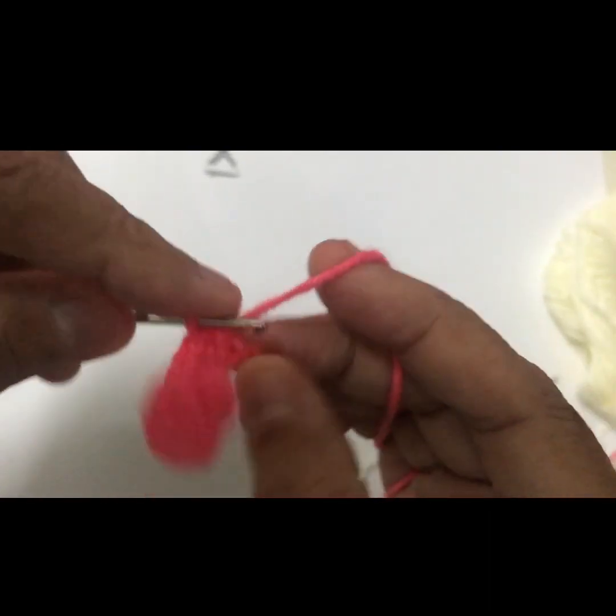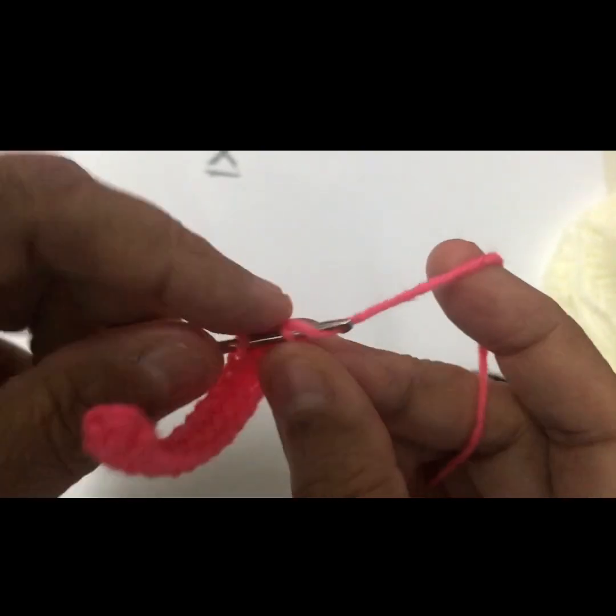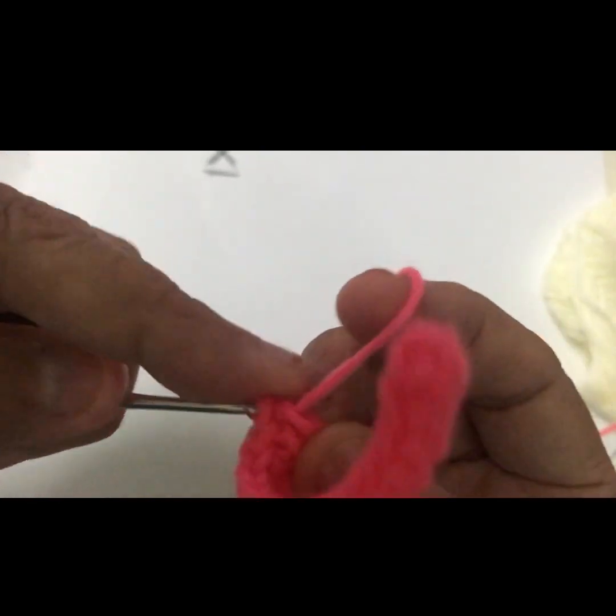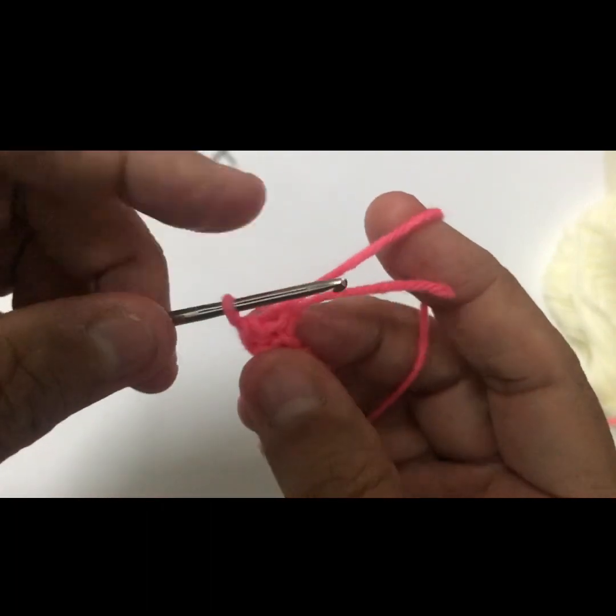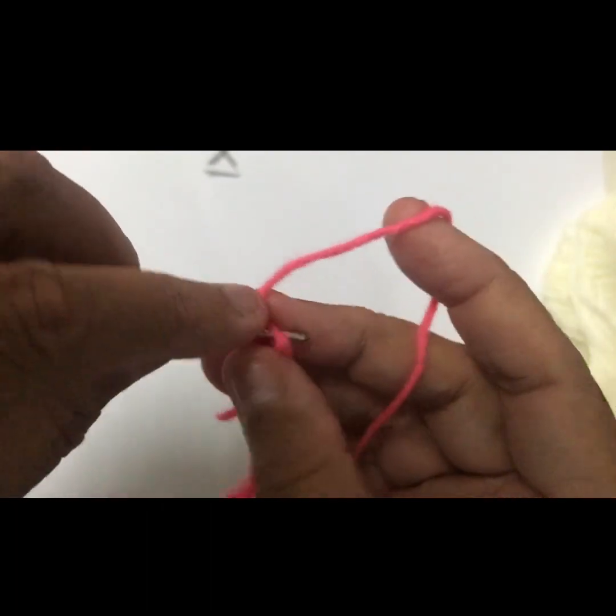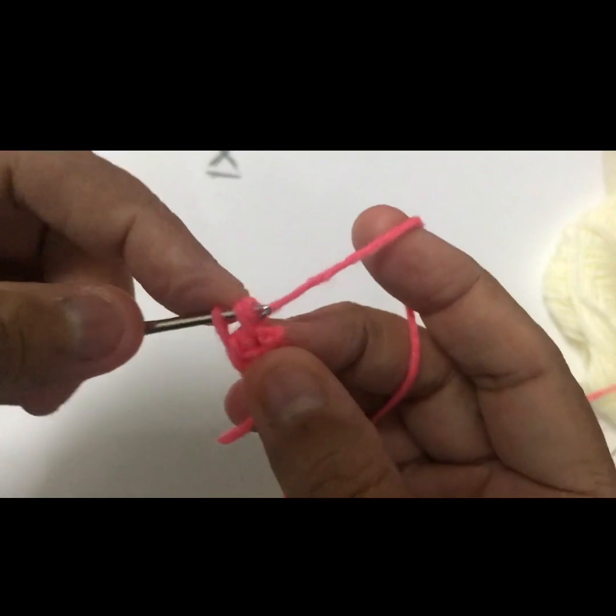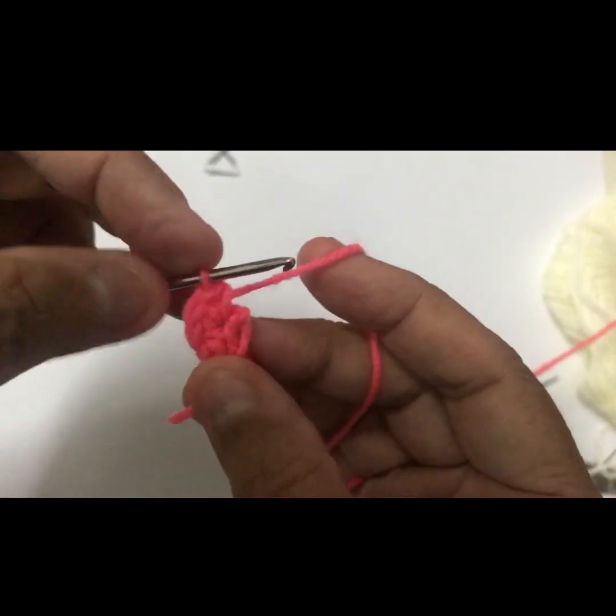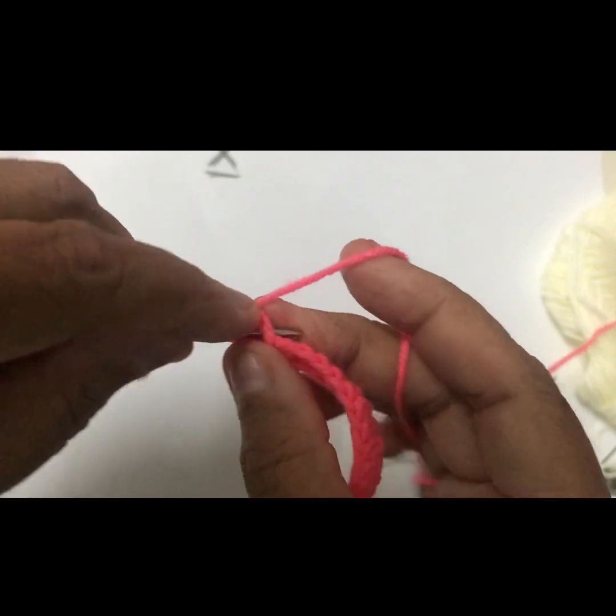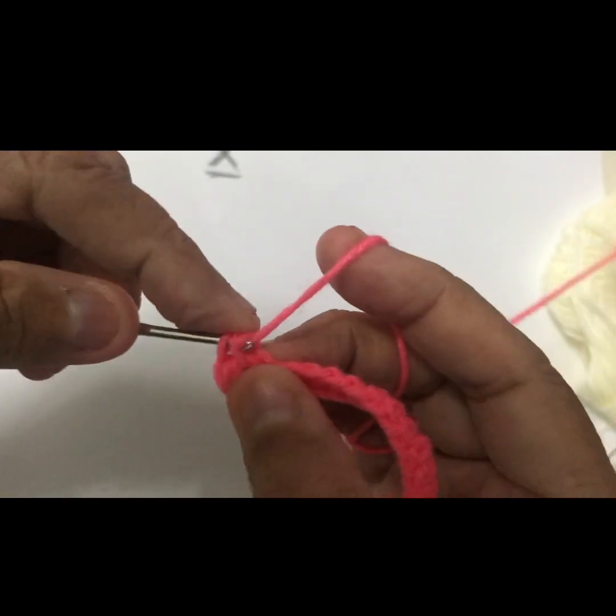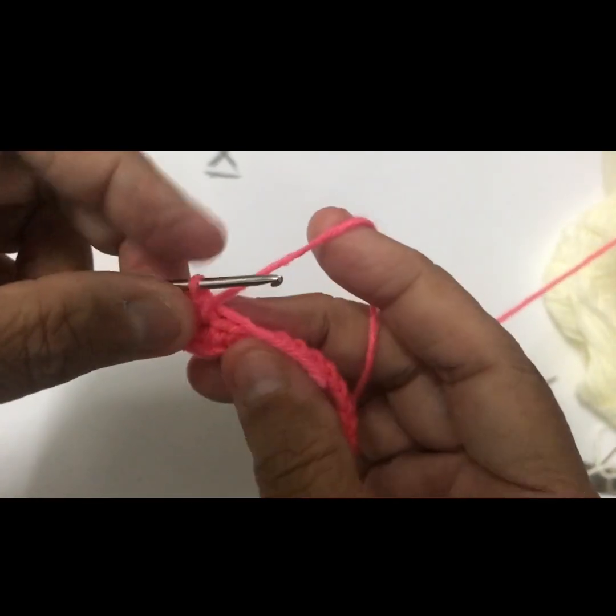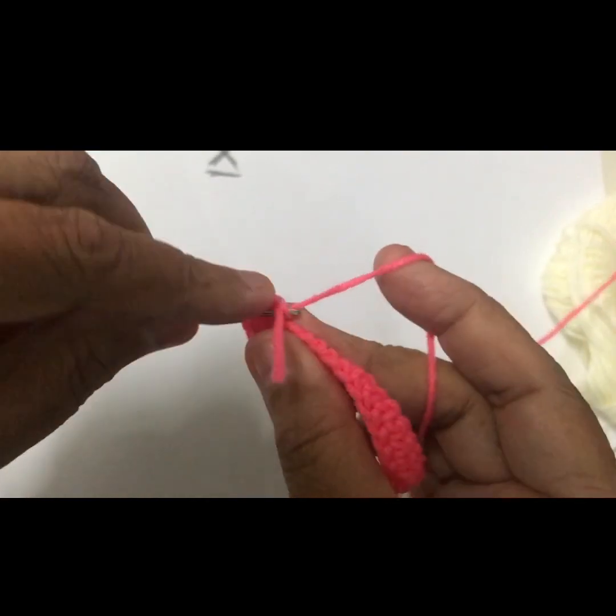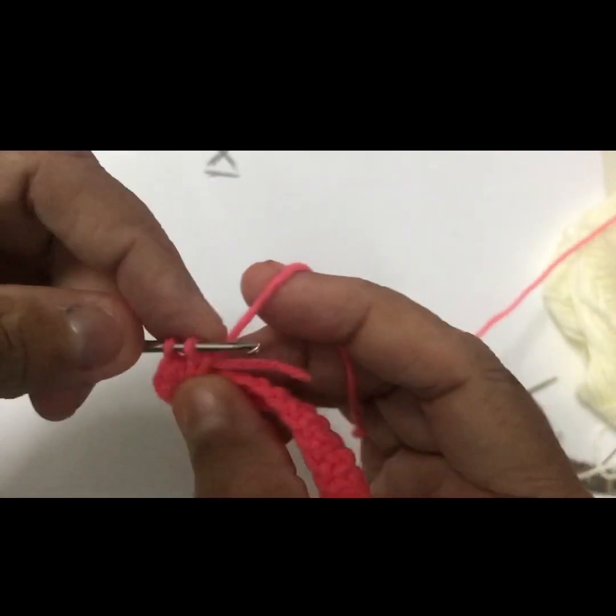We're coming to the end and then we do also four on that same chain. Four single crochet. It goes round. Then we go to the next. Five single crochets.